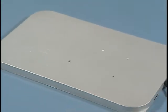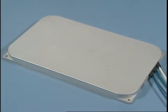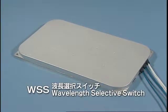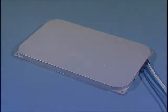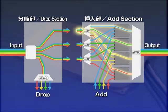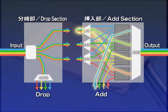Now let's see a key device for next-generation photonic networks: the WSS or Wavelength Selective Switch. In addition to the RODEM function, it has the capability to serve as a Wavelength Selective Cross-Connect node, which switches and connects arbitrary routes for each wavelength.